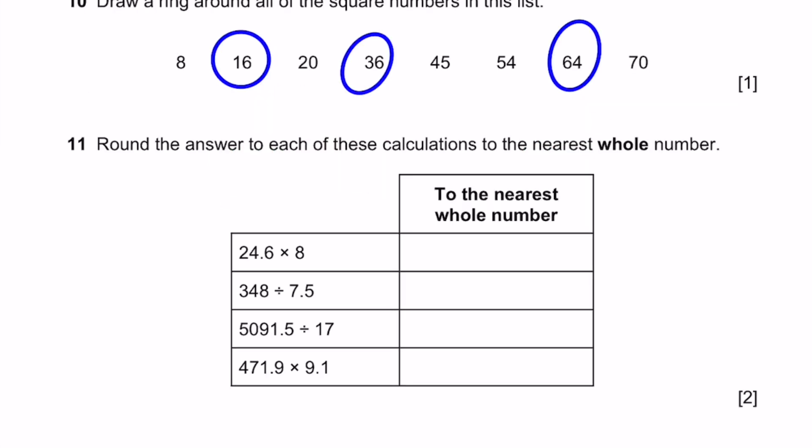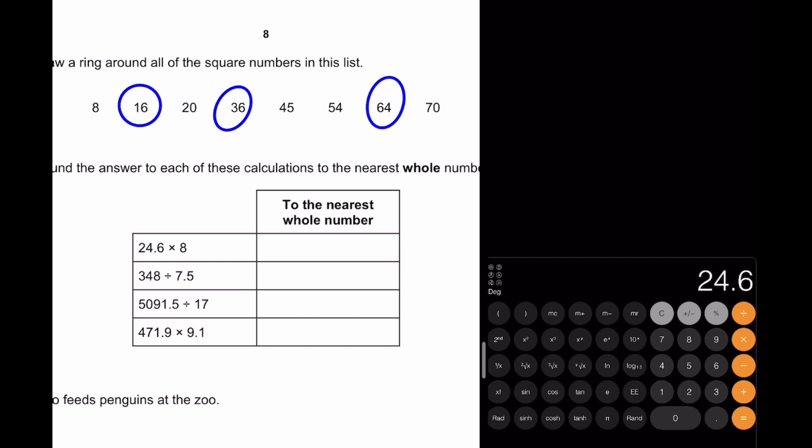Question 11. Round the answer to each of these calculations to the nearest whole number. 24.6 into 8. We just get our calculator out. 24.6 into 8. Now rounding 196.8 to the nearest whole number, that would be 197. 348 divided by 7.5, 46.4. Since 4 is less than 5, we can do just 46 for the nearest whole number. 5091.5 divided by 17, we get 299.5, which is the nearest whole number 300. And for 471.9 into 9.1, we get 429.4, which is simply 429 to the nearest whole number. That's the answer.